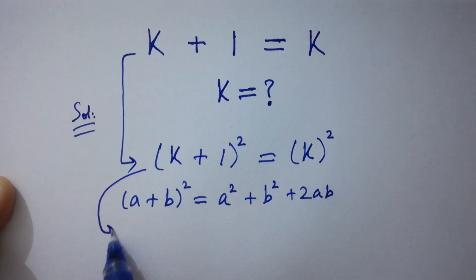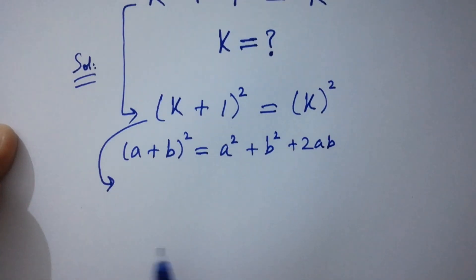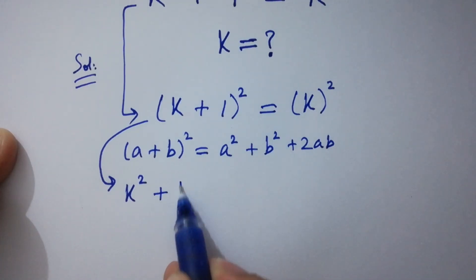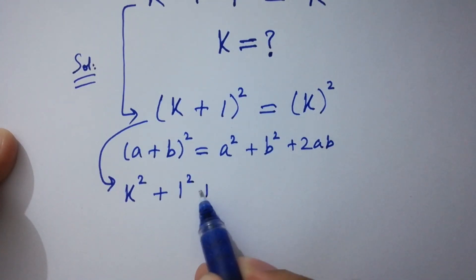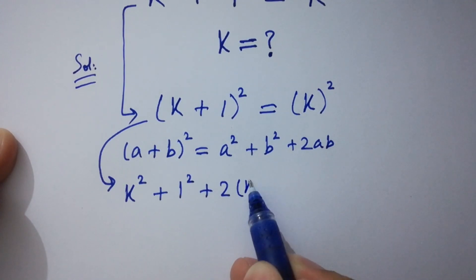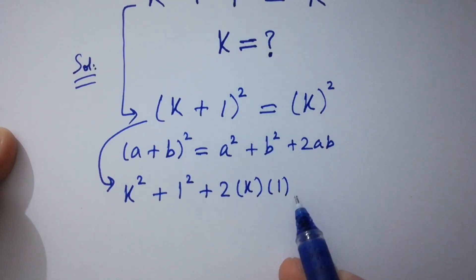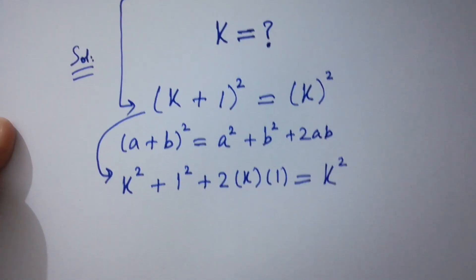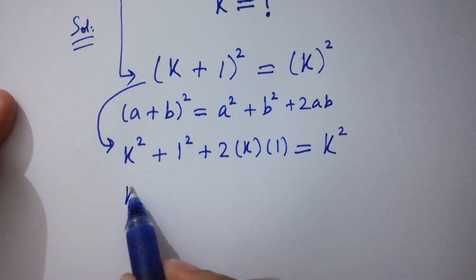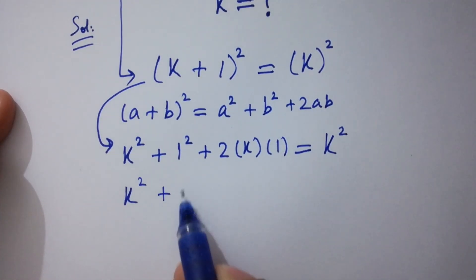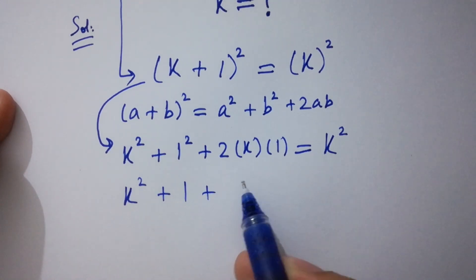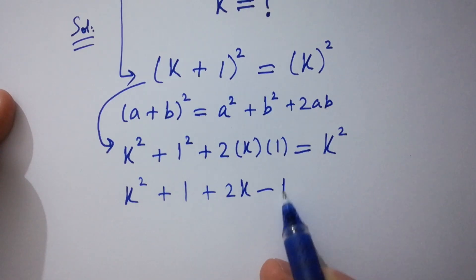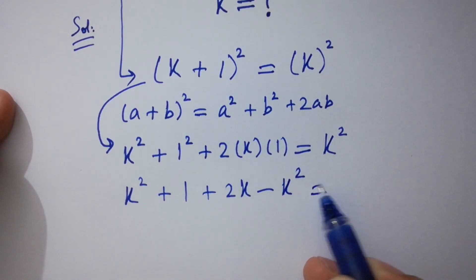Then we get k square plus 1 square plus 2 times k times 1 equal to k square. k square plus 1 square is 1 plus 2k minus k square equal to 0.